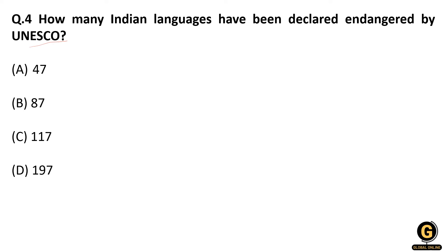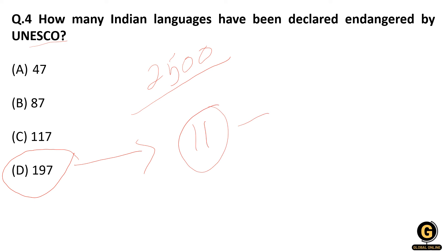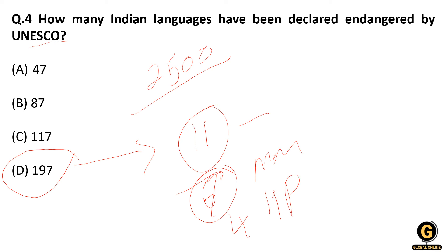How many Indian languages are endangered according to UNESCO? UNESCO maintains an atlas or record of endangered languages. In their record, 2,500 languages worldwide are listed as endangered. Of these, 197 Indian languages are listed as endangered. Of those 197, eleven are from Andaman and Nicobar, seven from Manipur, and four from Himachal Pradesh.